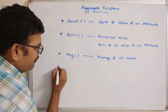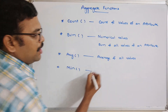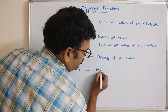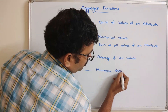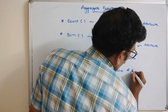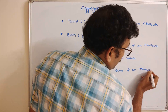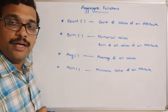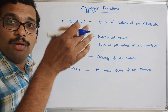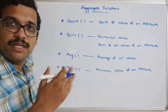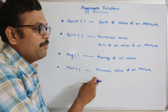Similarly, there is the MINIMUM function, which will give the minimum value of an attribute. The attribute means a column, and in that particular column there will be different values across different rows. Among those values, it will return the minimum value.